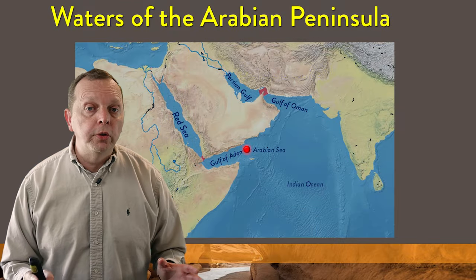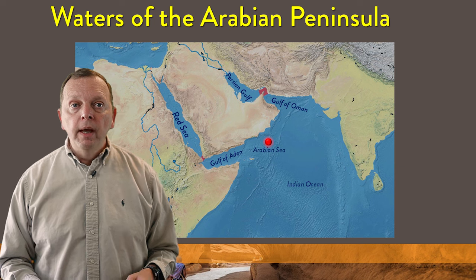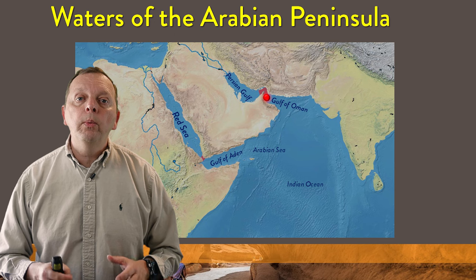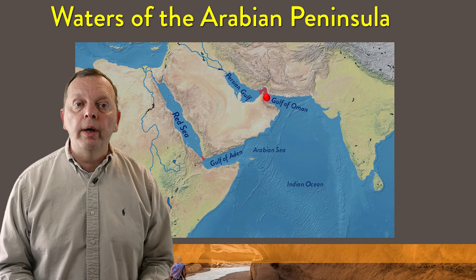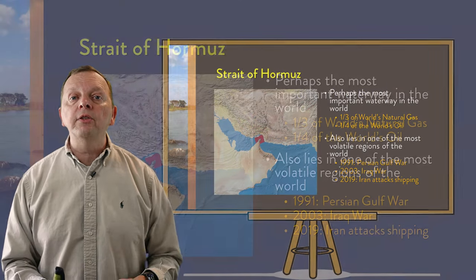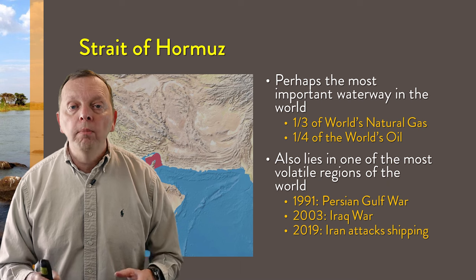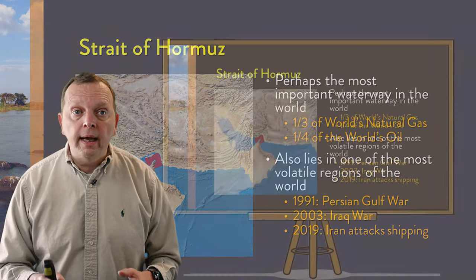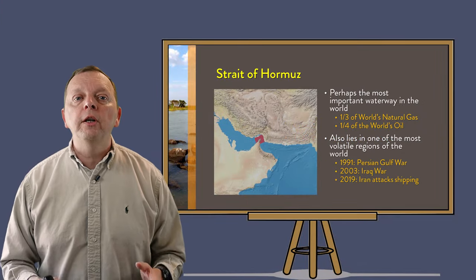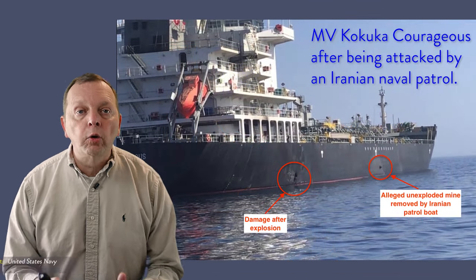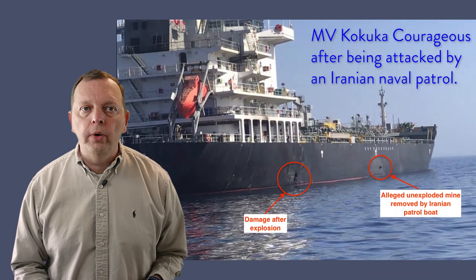The Gulf of Aden opens into the Arabian Sea, which is a sea in the Indian Ocean. Moving to the eastern side of the Arabian Peninsula, we enter the Gulf of Oman, and then another choke point: the Strait of Hormuz. This is arguably the most important waterway in the world, as one-third of the world's natural gas and a quarter of its oil must pass through it. It is only 21 miles wide and lies in one of the world's most volatile regions, and has been blocked several times — as recently as 2019, Iran was attacking ships passing through.